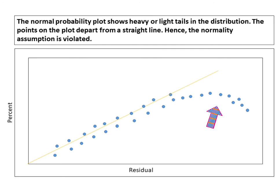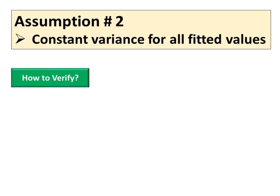Small departures from the normality assumption do not affect the model greatly, but gross non-normality is potentially more serious as the t and F statistics and confidence and prediction intervals depend on the normality assumption.